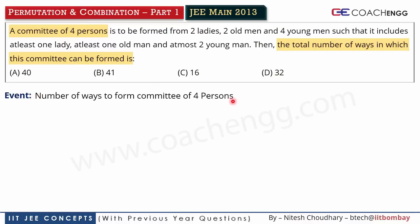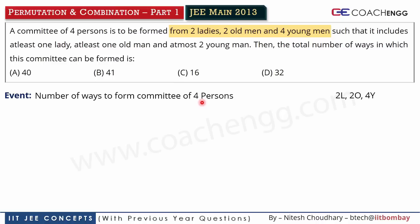Now, this committee of four persons has to be formed from — two ladies (2L), two old men (2O), and four young men (4Y). Basically, from this set of eight persons, we have to select four persons, and once we select them, our committee is formed. So we have to use the selection principle here.